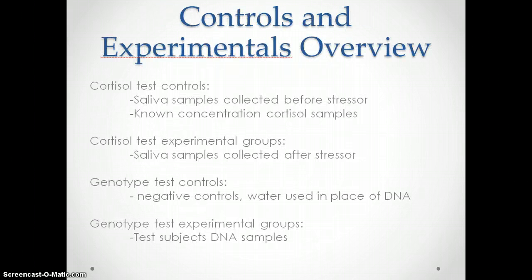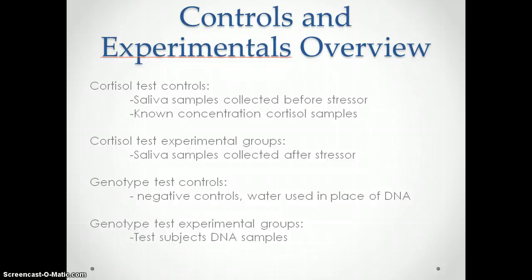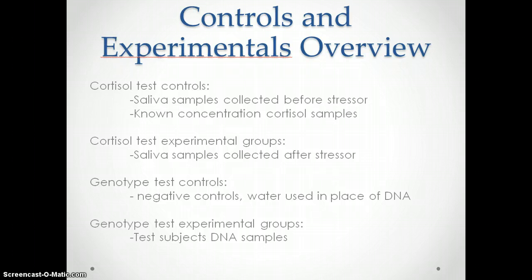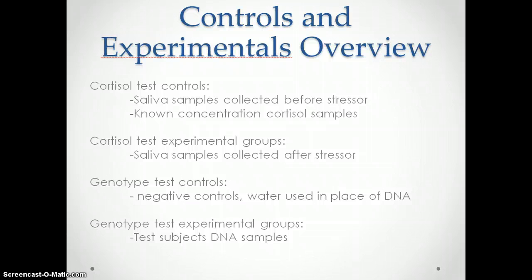For my experiment, I had controls and experimentals. For the cortisol tests, the controls were the saliva samples collected before stress and the known concentration cortisol samples. The experimental groups were the saliva samples collected after showing them the video. For the genotype test, the controls were negative controls using water in place of DNA, and the experimental groups were the test subjects' DNA samples.